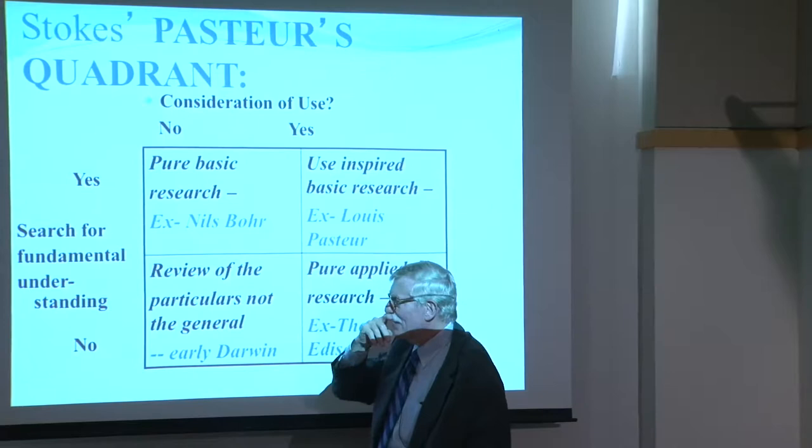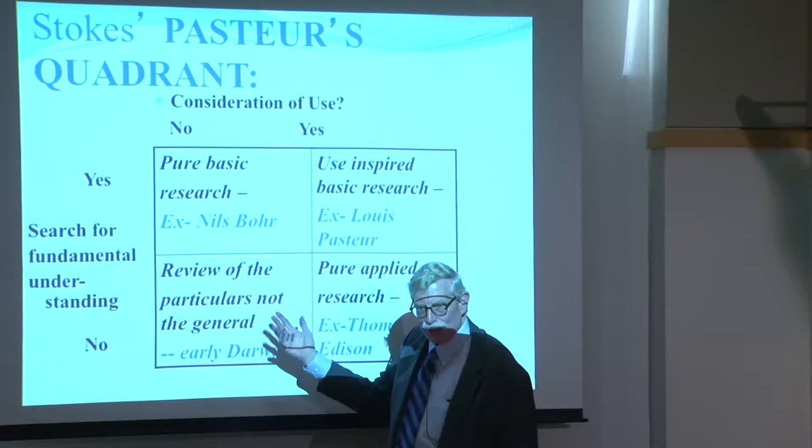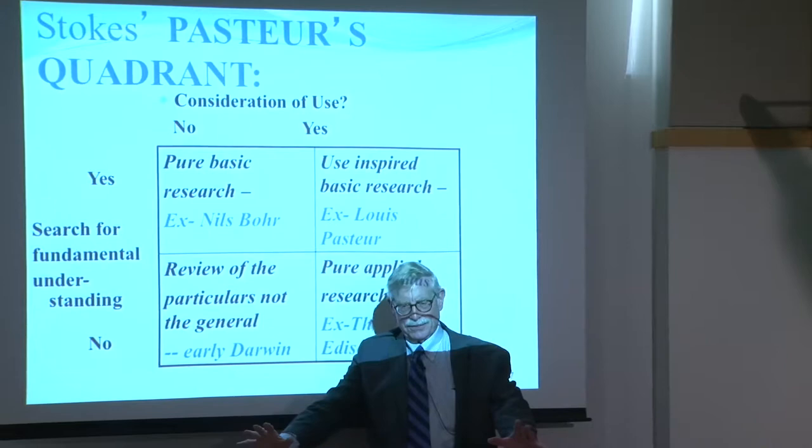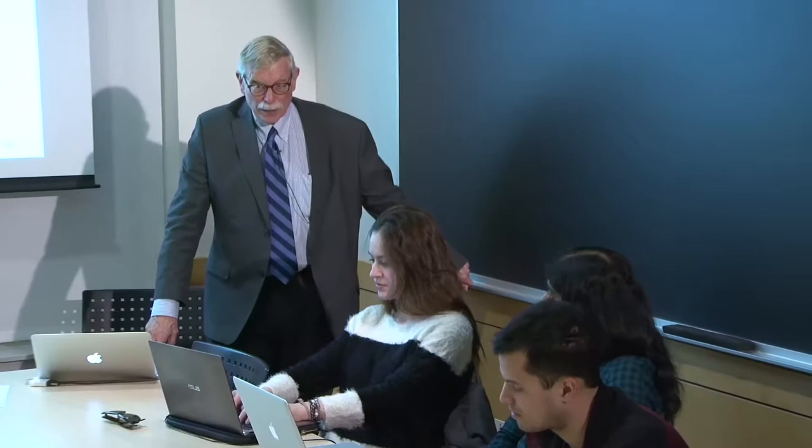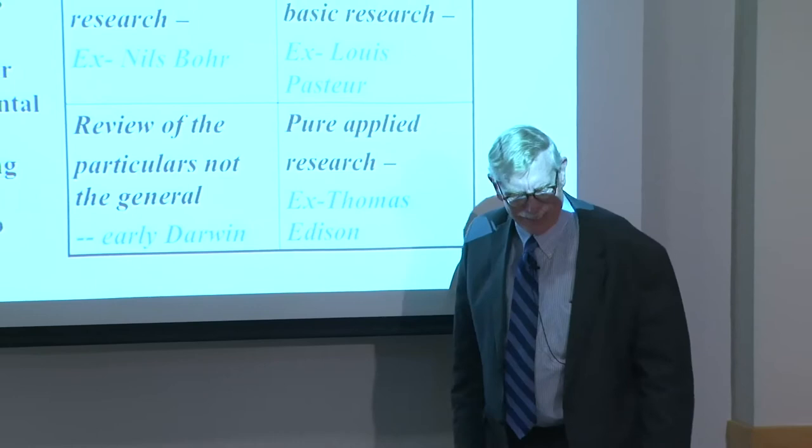The one quadrant that makes no sense is not searching for fundamental understanding and not considering use — who would do that? Stokes says Darwin. Darwin gets on a boat, has an ocean voyage, walks around the Galapagos, and evolution dawns. But that's not the way it happened. Darwin gets on the Beagle because he already has developed a lot of evolution theory. His father is a scientist who'd been working on it before him. So I don't really know anybody who quite fits there — Darwin really has a pretty good idea of the scientific theories he's pursuing. I think Stokes fills this blank in because it's a quadrant and he has to put something in there.